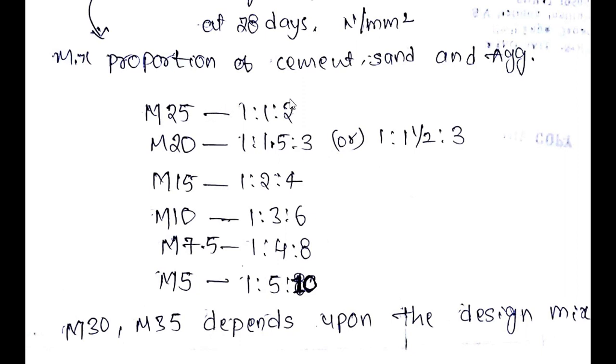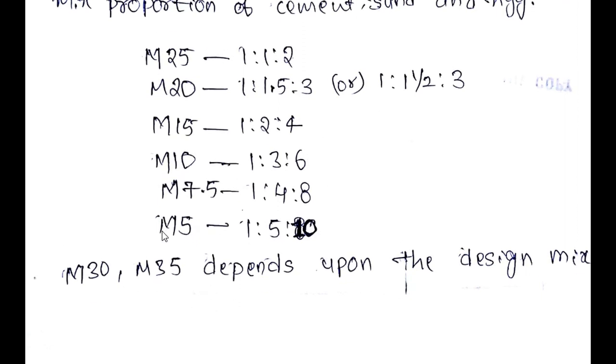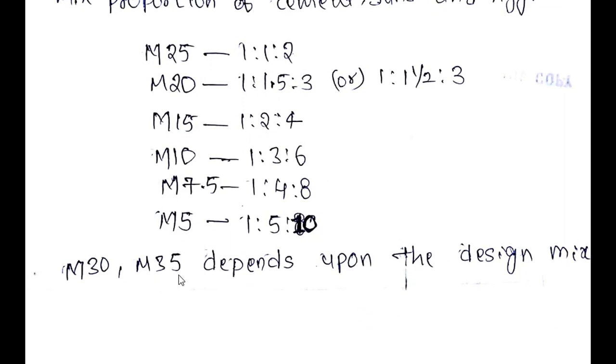I am repeating it again. As the grade of concrete decreases from M25 to M5, the proportion of cement remains the same, the proportion of sand increases by 1, and the proportion of aggregate we get by multiplying proportion of sand with 2. And the proportion of M30, M35 depends upon the design mix.